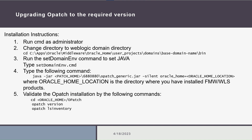After downloading the required OPatch version for the patch, we will start installing it by following the next steps. We will run the command prompt as administrator, then set our Java by changing the directory to the WebLogic domain directory and typing the following commands. Then we will type the following command to upgrade the OPatch version, and finally validate the OPatch installation by typing the following commands.